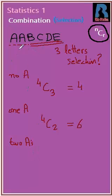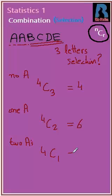With two A's, to make a set of three letters we need one more letter. So from the remaining four letters B, C, D, E, we will take only one, which means 4C1, giving us 4.